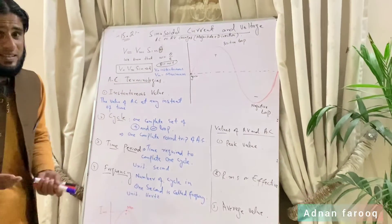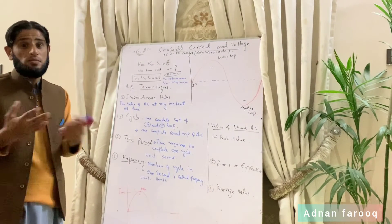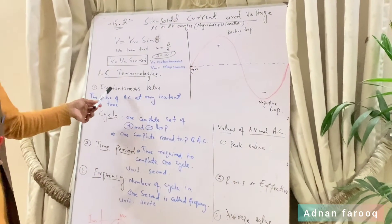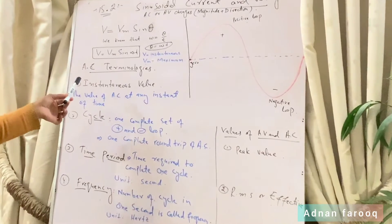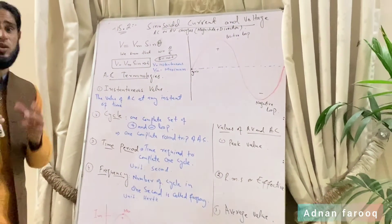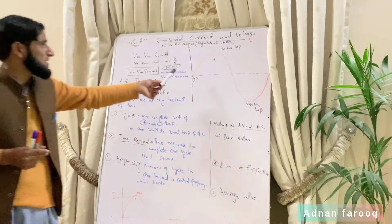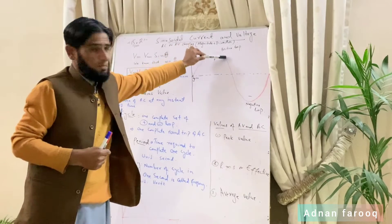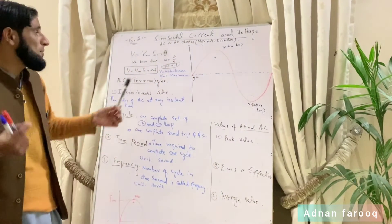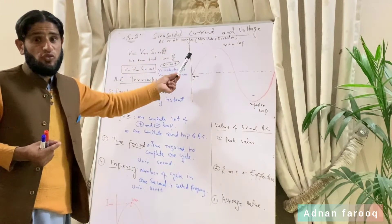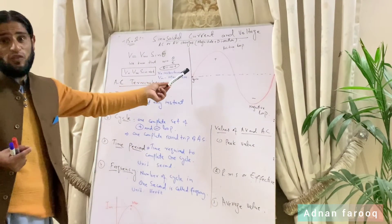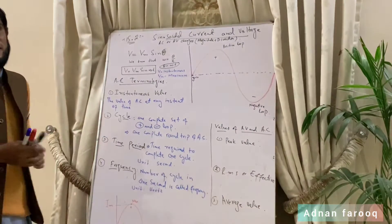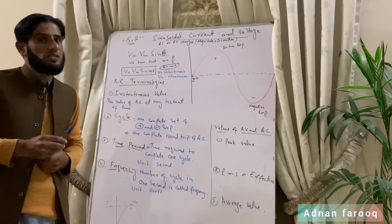Alternating source کی terminologies کیا ہیں؟ سب سے پہلی term ہے instantaneous value — instant خاص لمحے یا خاص time کو کہتے ہیں۔ جب sine curve بنتا ہے تو اس کے کسی ایک point کی value نکال لیں — چاہے upper peak ہو یا lower — اس value کو instantaneous value کہتے ہیں۔ دوسری term ہے cycle۔